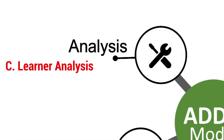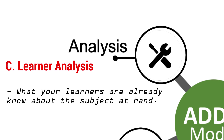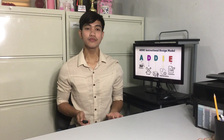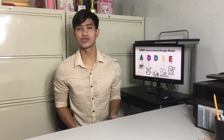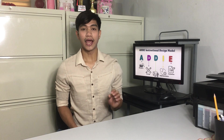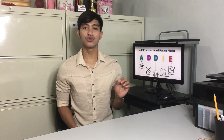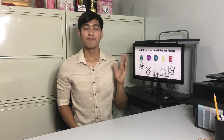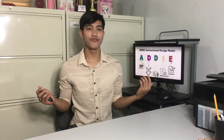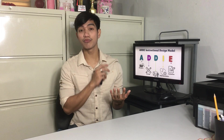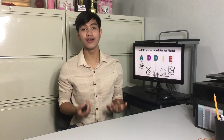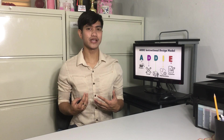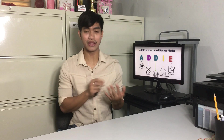The next part of the analysis phase is the learner analysis. This is when you find out what your learners already know about the subject at hand. When you have a specific set of learners — for example, one student — it's a lot easier to do a learner analysis; you can ask or talk to them personally. But if your learning audience is bigger, say 40 students — since the average class size in the Philippines ranges from 30 to 50 — you may need to conduct interviews and surveys.